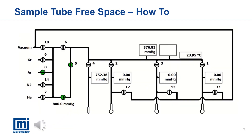During analysis, the valve to the chosen gas will open instead of the traditional helium. In this TriStar example, the manifold is being pressurized with argon as the selected gas.